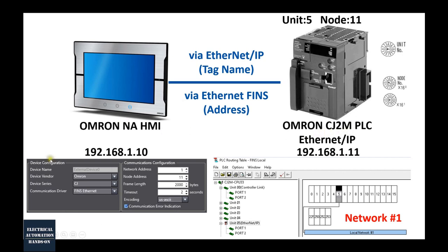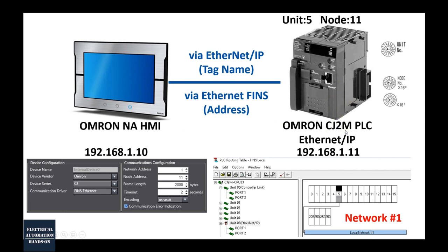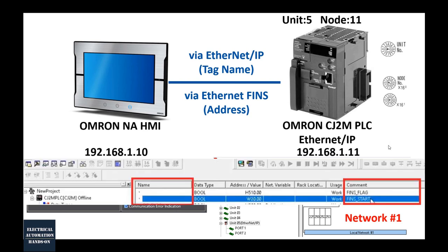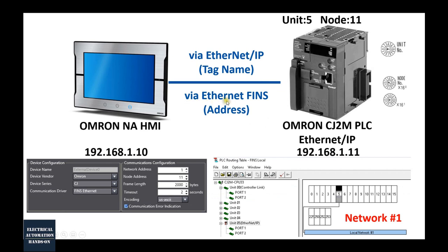The key issue comes from the HMI settings. This HMI has two ways to connect to the CJ2M. One is via the EtherNet/IP communication driver, and the other is via the older Omron-specific protocol called FINS — specifically Ethernet FINS. Because this project was upgraded from a CJ1M, I basically kept the existing program and symbols, which use absolute addresses. When I tried to set up the EtherNet/IP communication, I got into trouble, and then I realized I should use the Ethernet FINS communication.